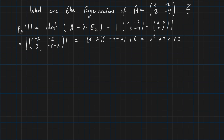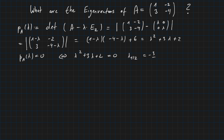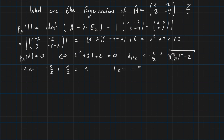The eigenvalues are the zeros of this characteristic polynomial, so we set P_A(lambda) to zero: lambda squared plus 3 lambda plus 2 equals 0. Using the quadratic formula, lambda 1,2 equals minus 3 over 2 plus or minus the square root of (3/2) squared minus 2. From this, lambda 1 equals minus 3/2 plus 1/2, which is minus 1, and lambda 2 equals minus 3/2 minus 1/2, which is minus 2.